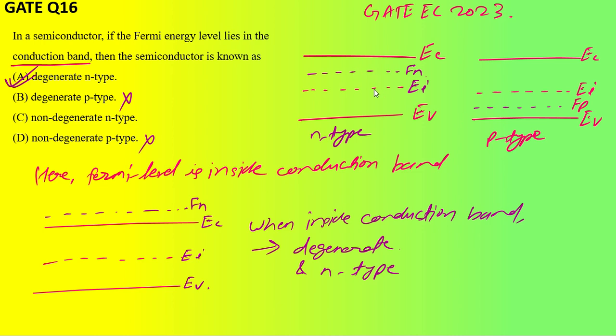Once it goes inside the valence band, then this will become degenerative p-type. Same way, this will become degenerative n-type once it goes inside the conduction band. All right, thank you.